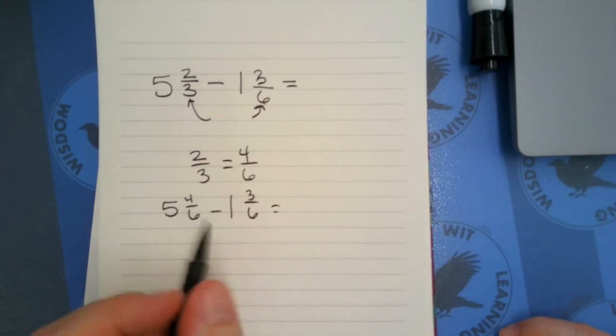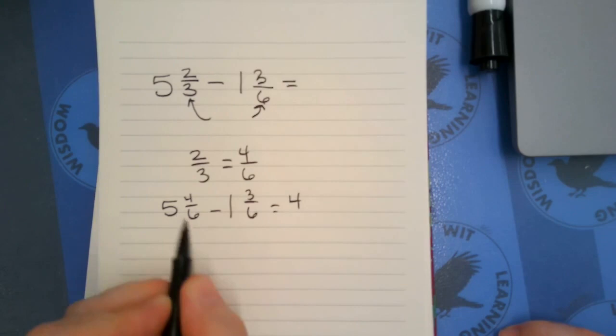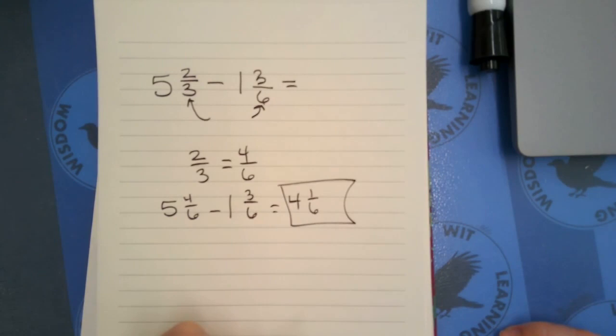So now I can subtract, and I could start with my whole numbers or I could start with my parts. So I'm just going to do the whole numbers first. So five minus one is four. And if I take away three sixths from four sixths, I end up with one sixth.